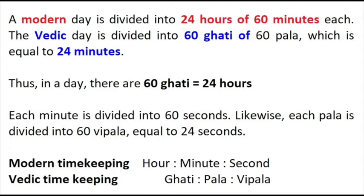Each minute is divided into 60 seconds, likewise each pala is divided into 60 vipala equal to 24 seconds. Modern timekeeping is in terms of hour, minute and second. Vedic timekeeping is in terms of ghati, pala and vipala.